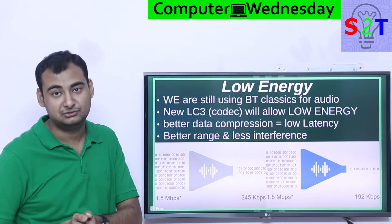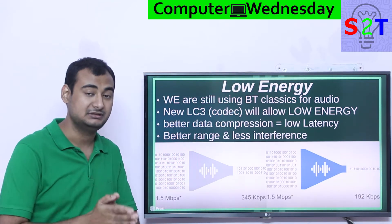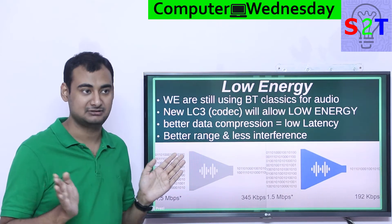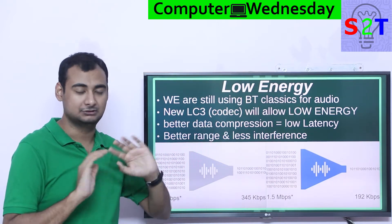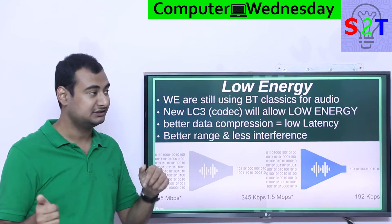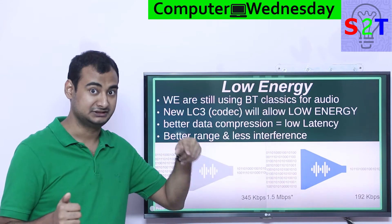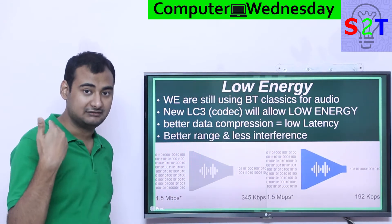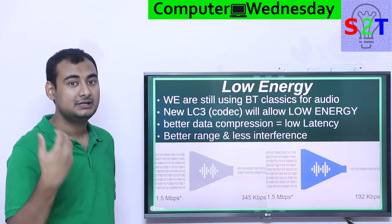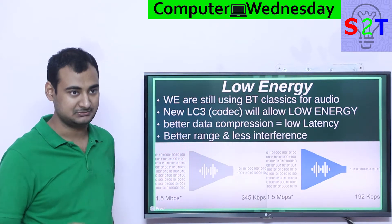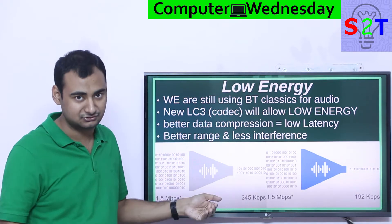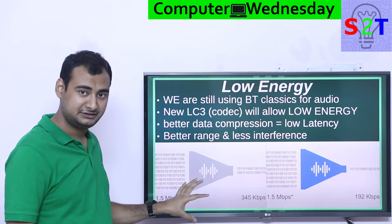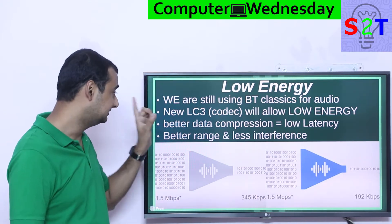They take a 1.5 Mbps pipe and compress it down to 345 kbps — that's a lot of compression. Even though Bluetooth can technically do 2 Mbps, in real life the radio spectrum is never that reliable. This compression results in less packet drop and a more reliable connection, so you can at least listen to your song without interruption.